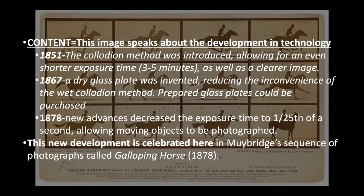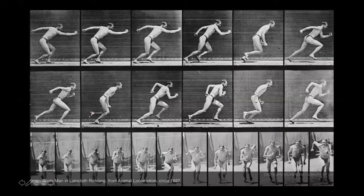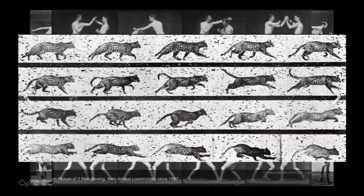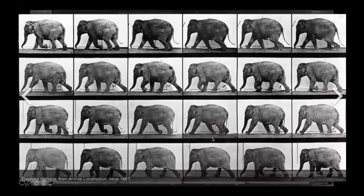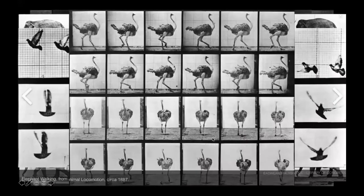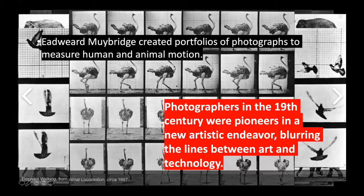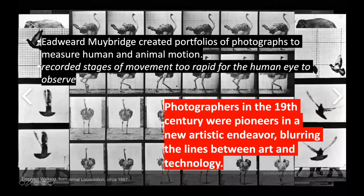This new development is celebrated in Muybridge's sequence of photographs called Galloping Horse, which could also relate to early animation. Photographers in the 19th century were pioneers in this new artistic endeavor, blurring the lines between art and technology. Muybridge is known for creating portfolios of photographs to measure human and animal motion, recording stages of movement too rapid for the human eye to observe.